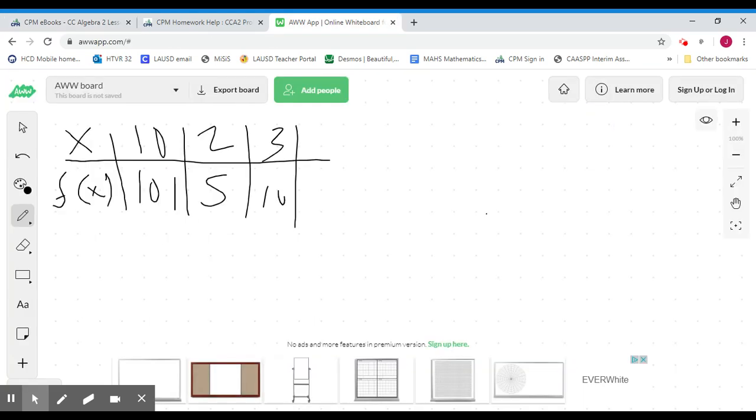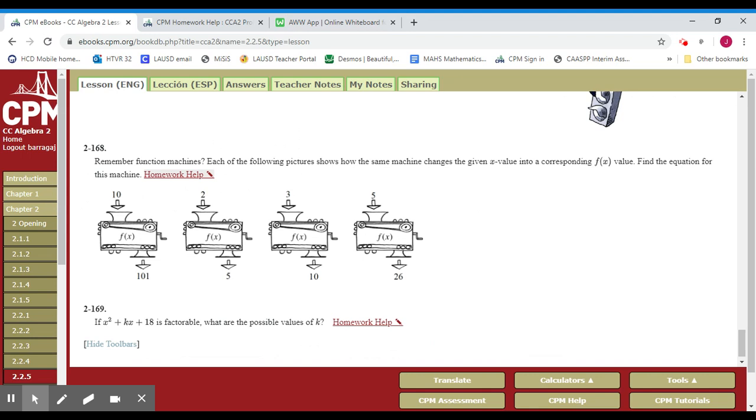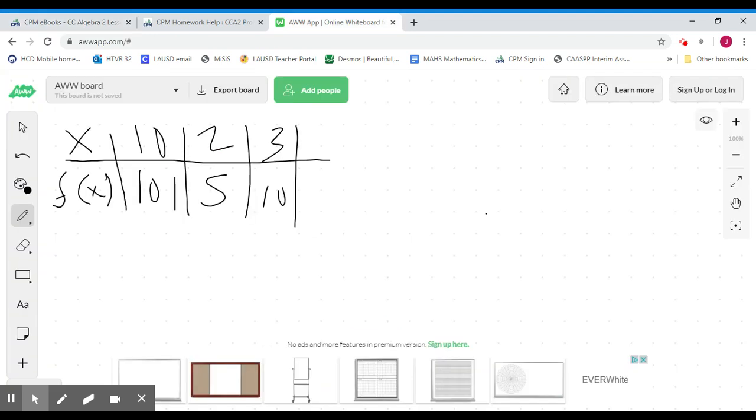If I input 2 what do I get, it was 5. If I input 3 I get 10. If I input 5 I get 26. Okay good. So here's a question for you guys, what is the function?